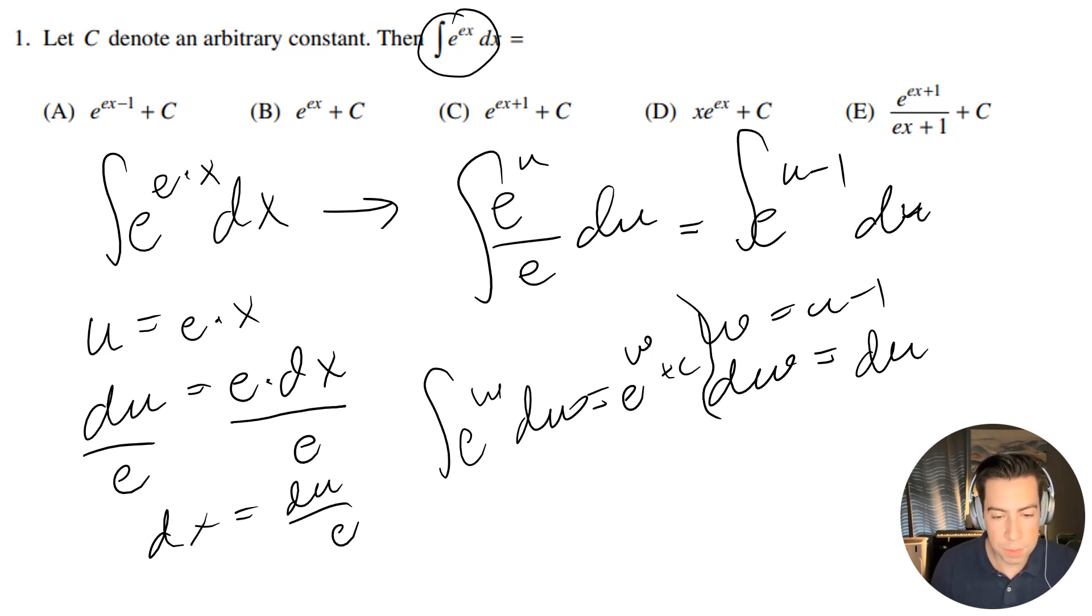So if that's the case, now I'm just going to plug in for w. So w is u minus 1, so I will have e to the u minus 1 plus C. And then I know that u, well that's just e times x, so it'll be e to the e times x minus 1 plus C.